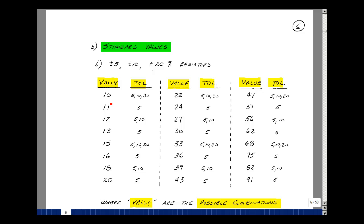So I could get a 10 ohm resistor, a 100 ohm resistor, a 1,000 ohm resistor, a 10,000 ohm resistor, a 100,000 ohm resistor, a 1 million ohm resistor, a 10 million ohm resistor. You can do the same thing for all these other values here.